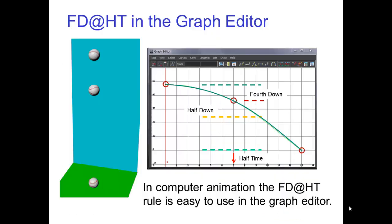In computer animation, the fourth down at half time rule is easy to use in the graph editor. After selecting the top and bottom keys, just position the breakdown key as shown here. The computer will automatically calculate the position of the ball on all the other frames. By the way, this graph editor curve needs to be flat at the apex. Don't forget to check that.